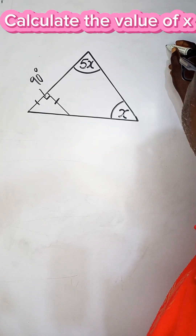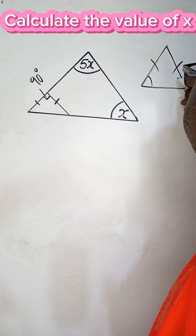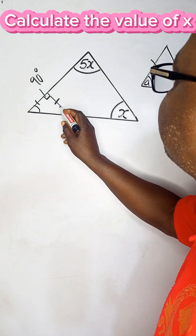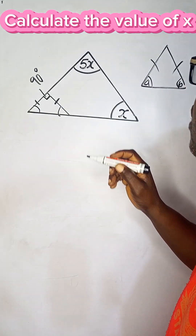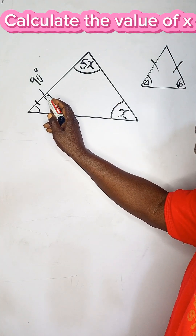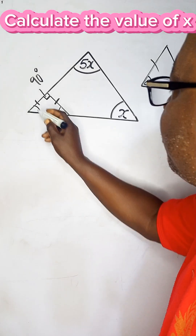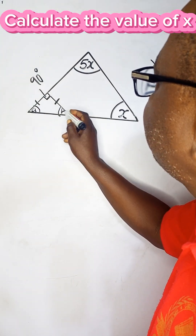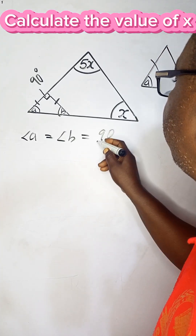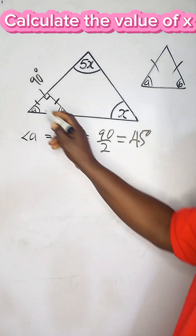Remember the properties of an isosceles triangle: two sides are equal, and automatically the base angles are equal. So this angle must be equal to this angle — those are the base angles. We also know that the sum of interior angles of any triangle is 180 degrees. Since one angle is already 90 degrees, the other two must sum to 90 degrees. Since they are equal, calling them angle a and angle b, angle a equals angle b, which is 90 divided by 2 — that is 45 degrees.